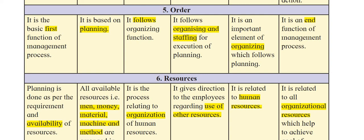Directing follows organizing and staffing — it is needed for execution, which follows planning. Coordination follows planning and is one of the elements of organizing, because you organize things in such a way that everybody does their work clearly. Controlling is the end function of management — always remember, first is planning and the last is controlling, comparing standard performance with actual performance.